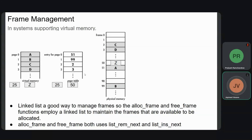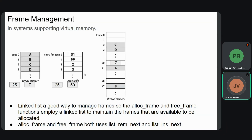This is another image representing the usage of a page table for translation of virtual memory to physical memory. The way we are going to implement this is using a linked list. A linked list is a good way to manage frames, so the alloc_frame and free_frame functions are employed to maintain the frames available to be allocated in physical memory and ready to be assigned to processes. Both functions make use of list_insert_next respectively.